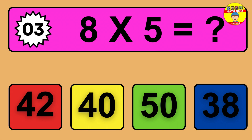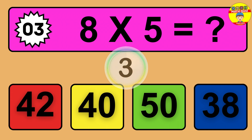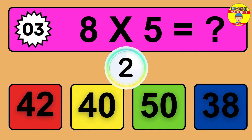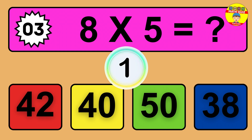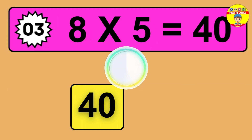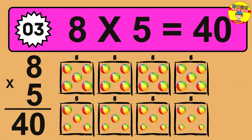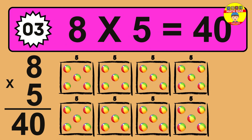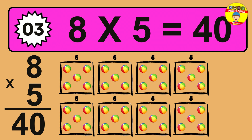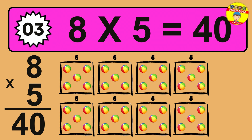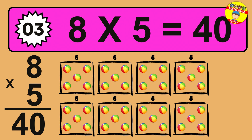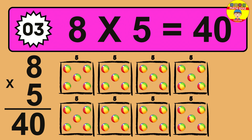Question 3. 8 times 5 equals what? The answer is 8 times 5 is 40. To calculate, we have 8 groups with 5 balls each one. So how many balls do we have? 40 balls.